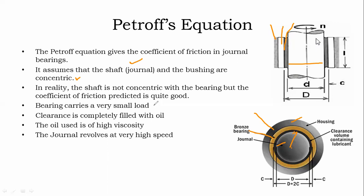Next assumption: the bearing carries very small load. Next, the clearance is completely filled with oil — whatever gap we have between the bearings should be completely covered with oil. The oil used has high viscosity. And the journal or shaft rotates at high speed. So the assumptions are: shaft/journal/bushing are concentric, bearing carries very low load, clearance is completely filled with oil, oil has high viscosity, and journal revolves at very high speed.